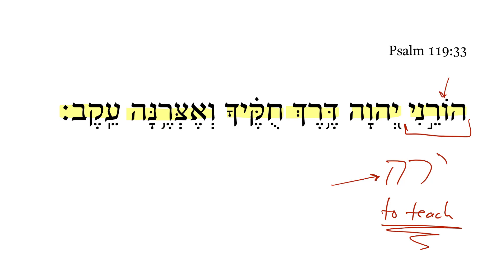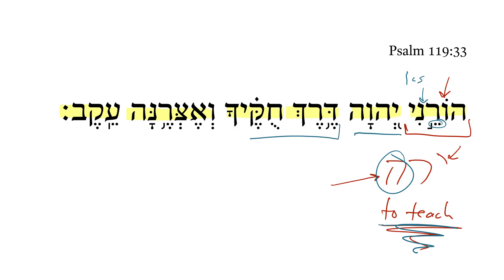You'll notice here we have the contraction of the one Yod-Vav into the Ho for the Hifil, and then we also have the third He that is missing. The Sere is the connecting vowel in the third-He verbs when we get a suffix, and here we have the one CS suffix. So we end up with: teach me, O Lord, the way of your statutes.